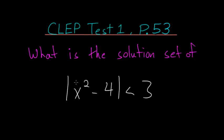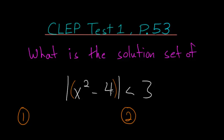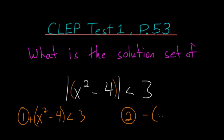The first case is where the expression x squared minus 4 is a positive number, so the absolute value bars don't affect it. The second case is where the expression x squared minus 4 evaluates to a negative number, and then the absolute value bars will flip it.